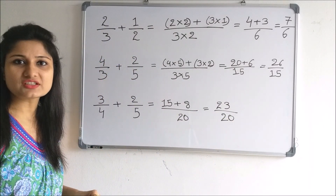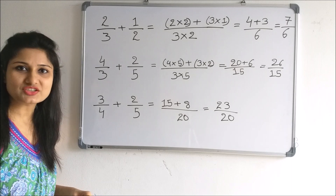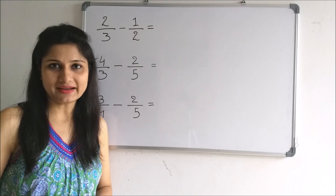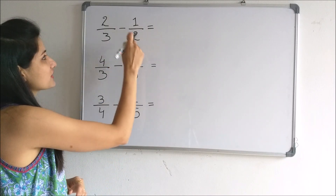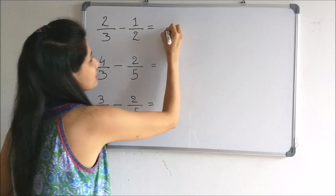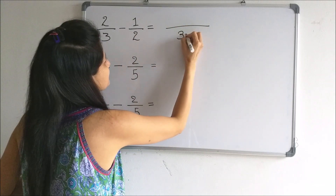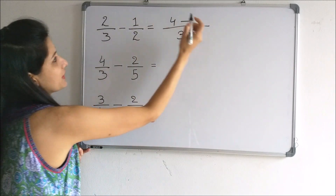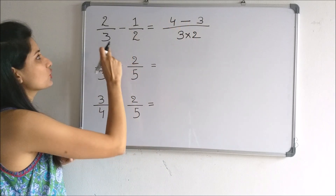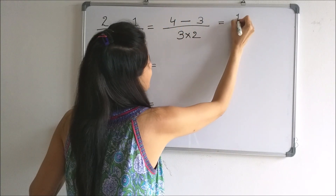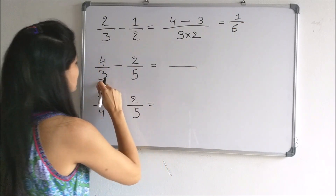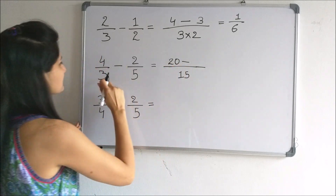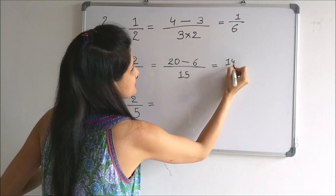This is how we add two fractions with different denominators. Now let us take examples of subtraction when the denominators are different. The same rule applies, except instead of adding the products of the cross multiplication, we subtract them. We multiply the two denominators and do the cross multiplication: 2 times 2 is 4 minus 3 times 1 is 3 — instead of adding, we subtract, because we have to subtract these two fractions. The answer is 1 by 6. Here also, we multiply the denominators to get 15, do the cross multiplication: 4 times 5 is 20 minus 3 times 2 is 6, giving us 14 by 15.